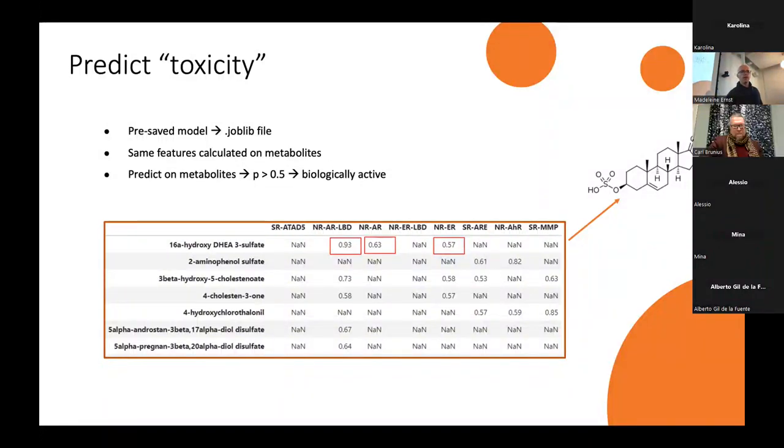So now I have probabilities for each of the metabolites being active against each of the targets. And I have 600 kids which have concentrations of the metabolites. This is the data I'm working with right now.